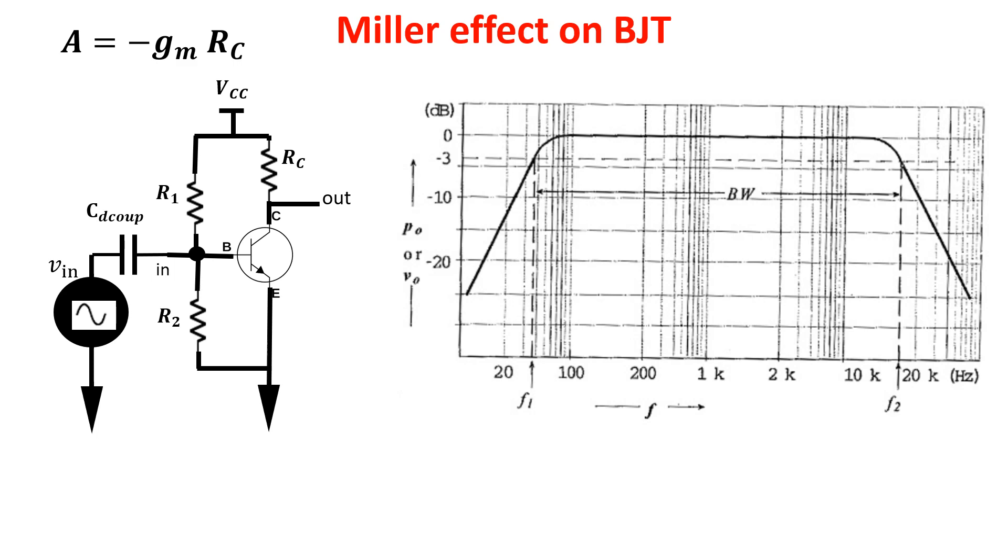This is because we have some capacitances involved due to the PN junction of the BJT and to the charge in the base. In particular, the drop at low frequencies comes from the decoupling capacitor we use to decouple the input signal from the biasing of the circuit.